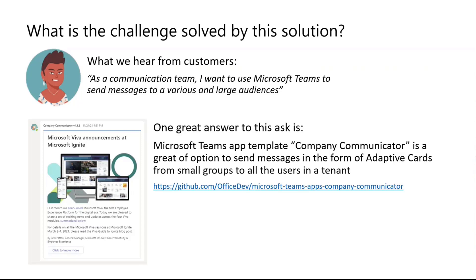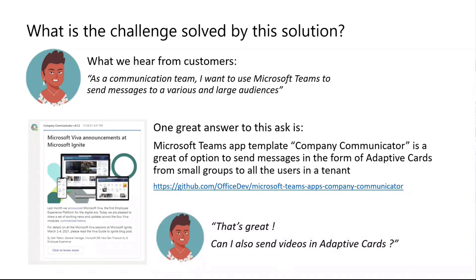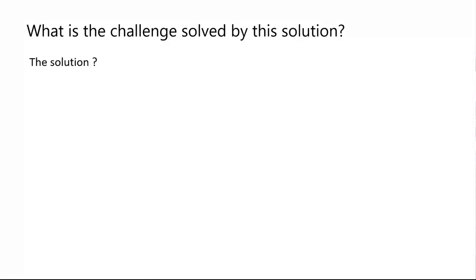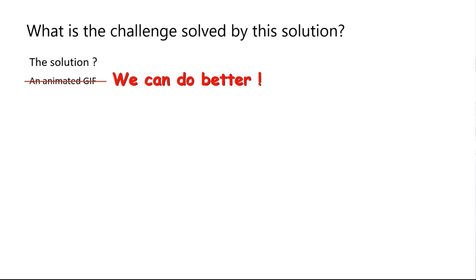The first question that comes very fast after deploying this solution is: can I also send videos in this Adaptive Card? Can I send modern media into this modern communication channel? One early solution we provide is to use an animated GIF — you take your video, convert it to an animated GIF, and send that instead of a JPEG. But it doesn't last very long: you don't have any sound and it's very short sequences. So we definitely had to find a better answer to this problem.